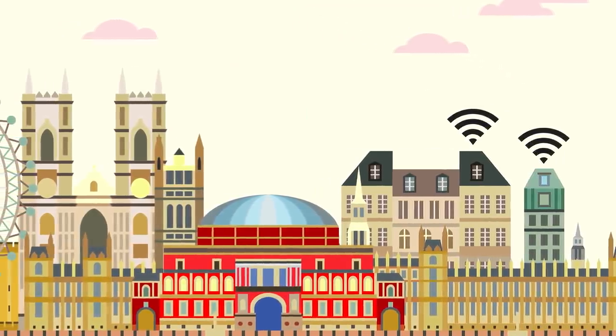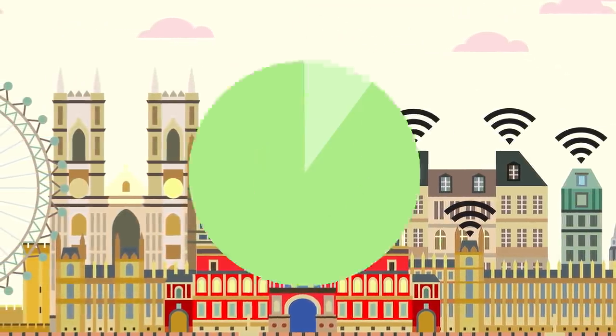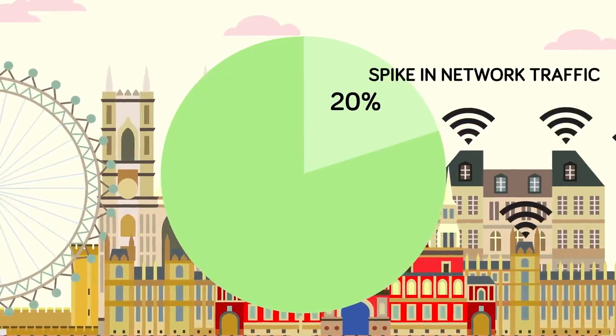Key internet exchanges in various European cities such as Amsterdam, London, and Frankfurt have seen a 10-20% spike in traffic since early March.